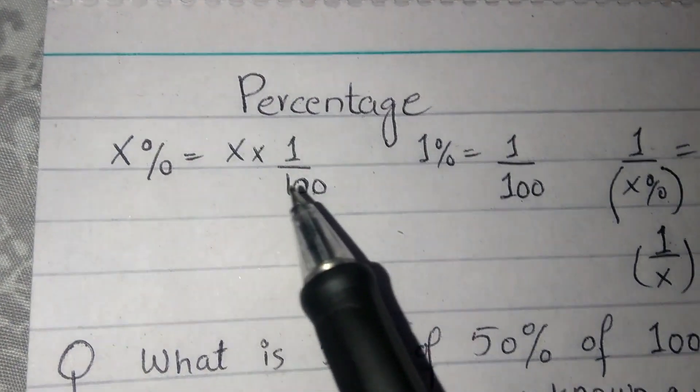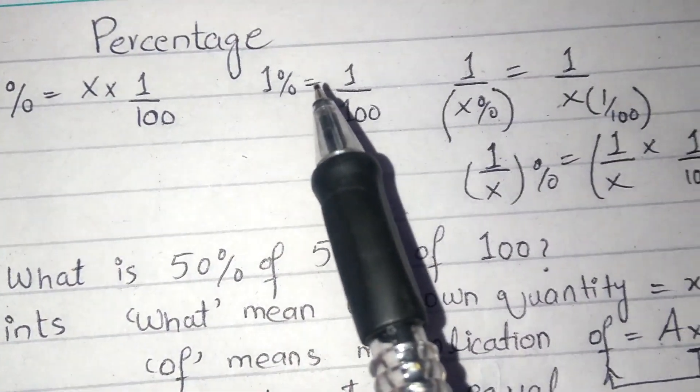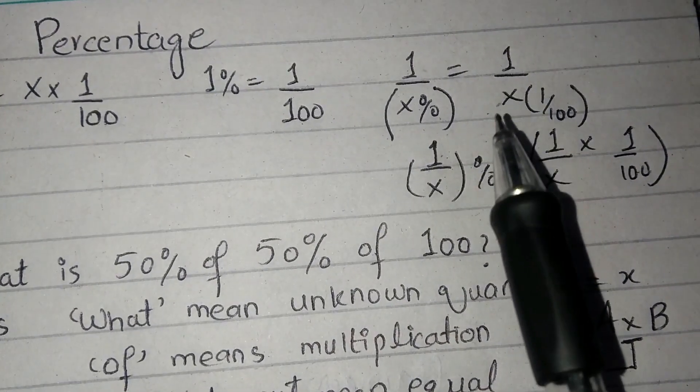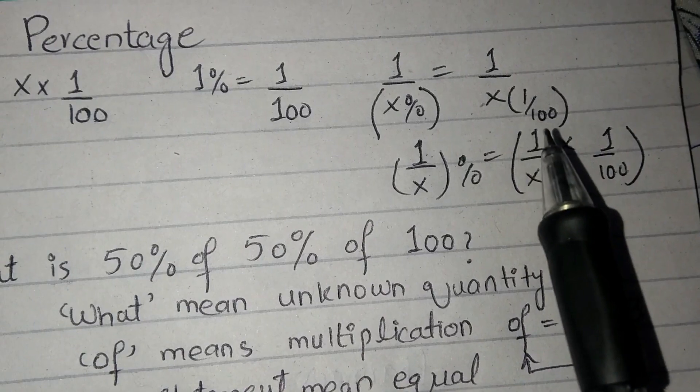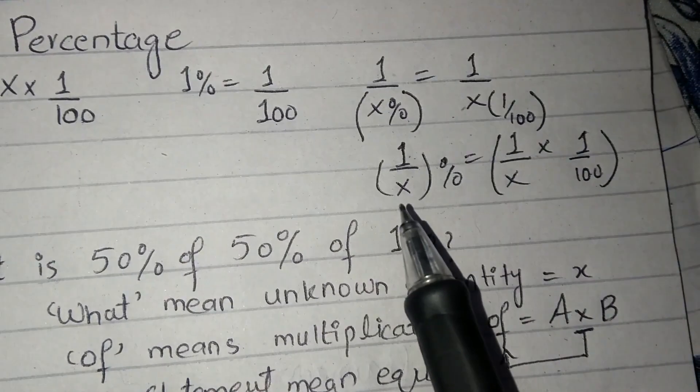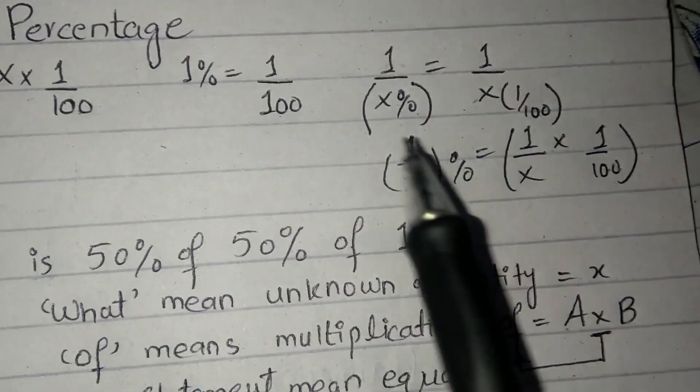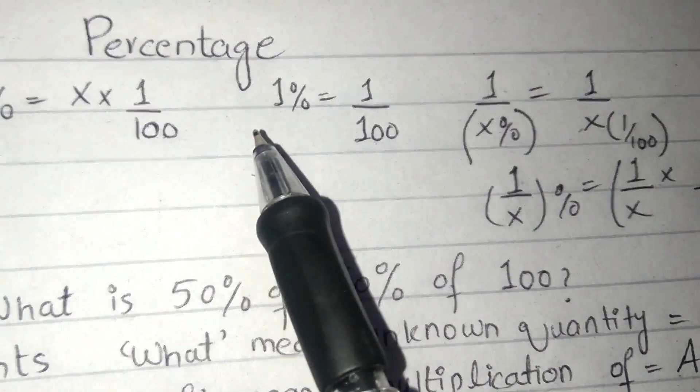x percent equals x by 100. 1 percent equals 1 by 100. In this way, 1 by x percent equals 1 by x into 1 by 100. Percent means 1 by 100, this is what you have to remember.